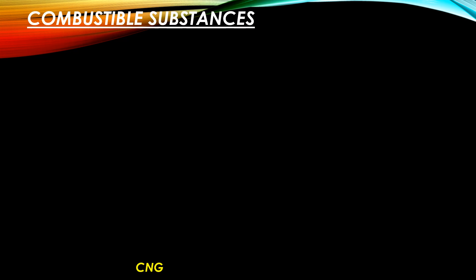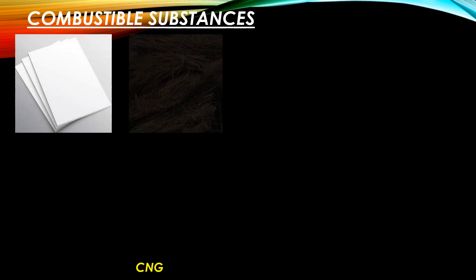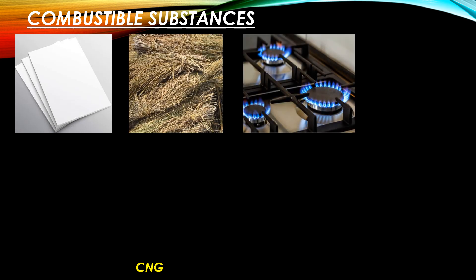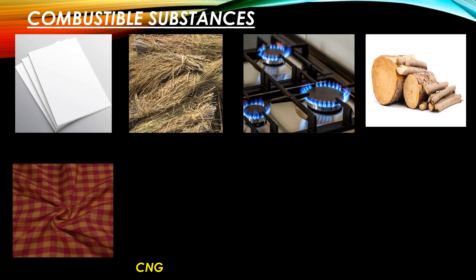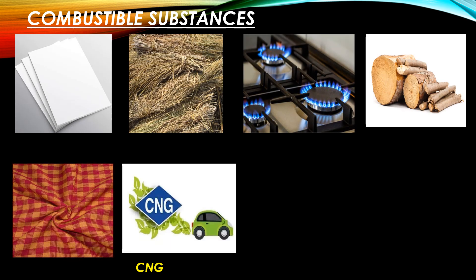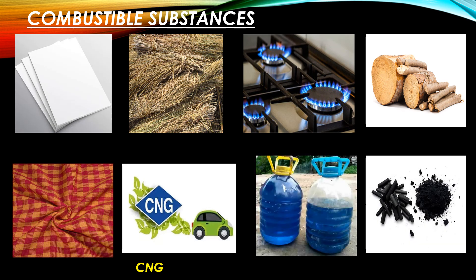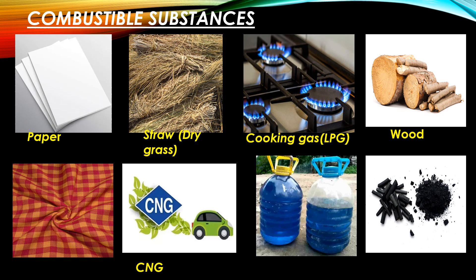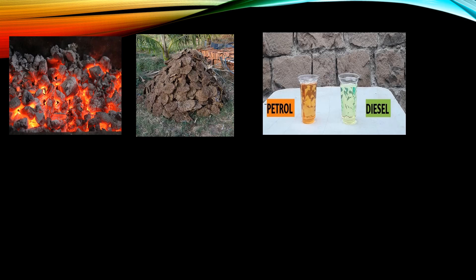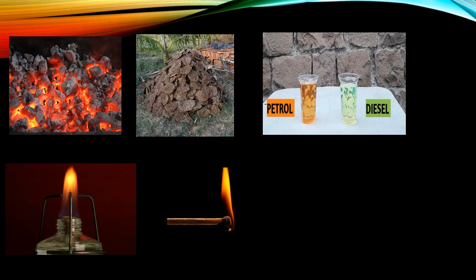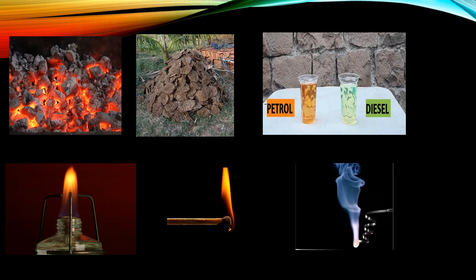Let us now see these combustible substances with pictures: paper, straw, cooking gas, wood, cloth, CNG, kerosene, charcoal, coal, cow dung cakes, petrol and diesel, alcohol, matchstick, and magnesium ribbon.